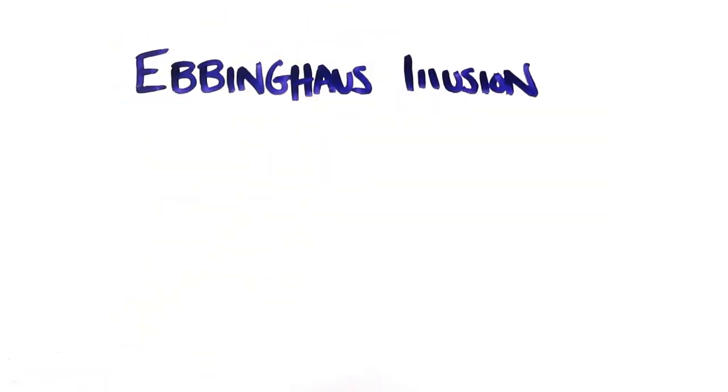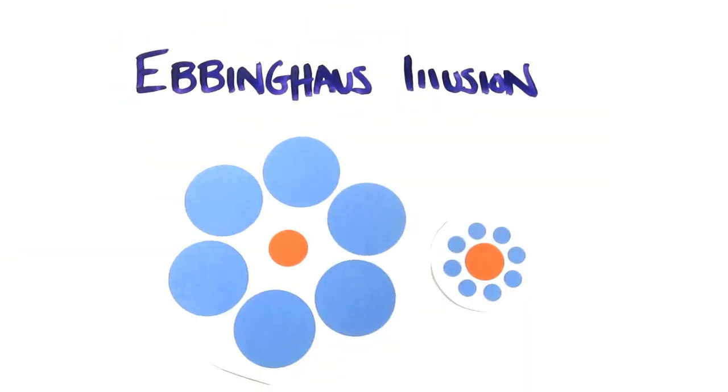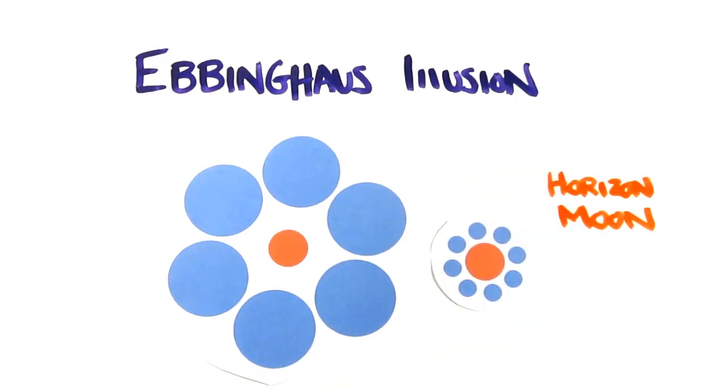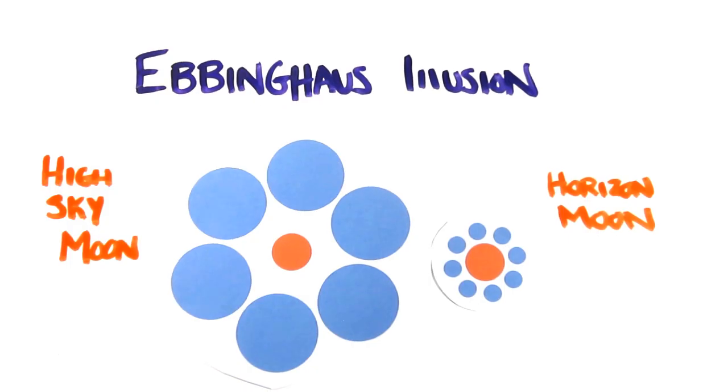It's similar to an effect known as the Ebbinghaus illusion. Which of these orange circles is larger? It turns out they're the exact same size, but the objects surrounding them have an effect on our brain. The small circles are comparable to the horizon moon with smaller objects in sight, while the large circles are comparable to the high moon surrounded by vast night sky.